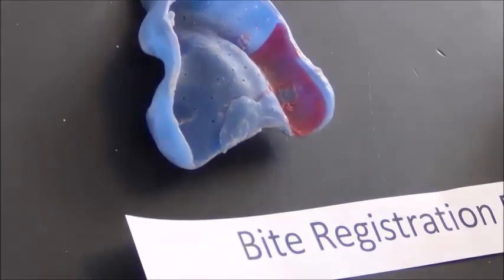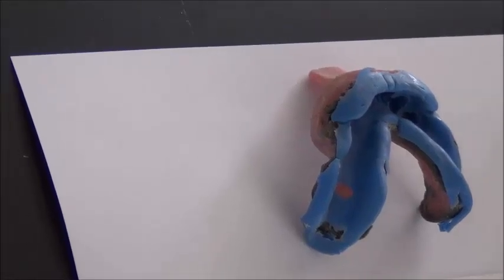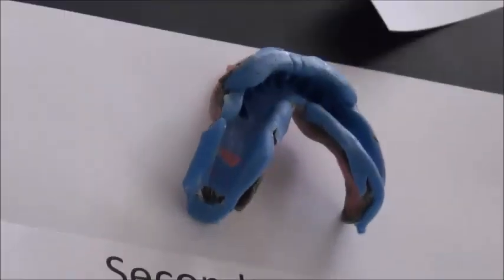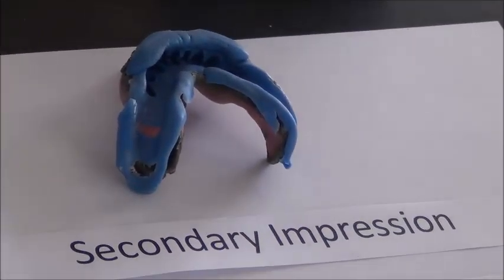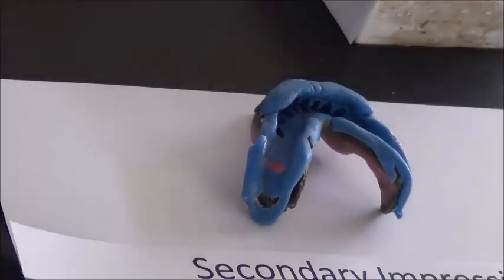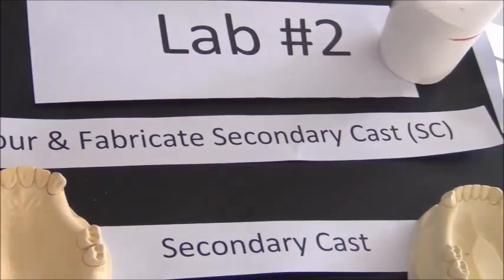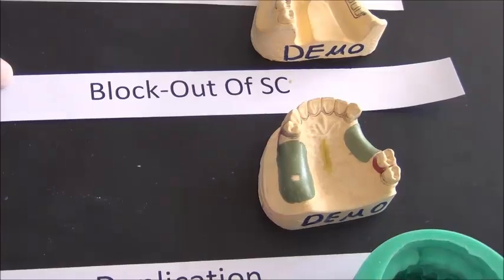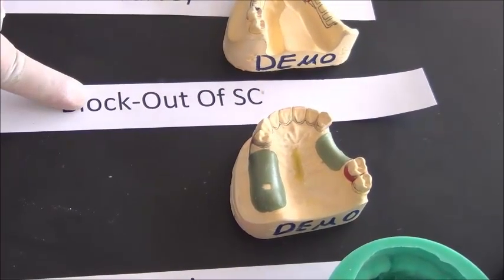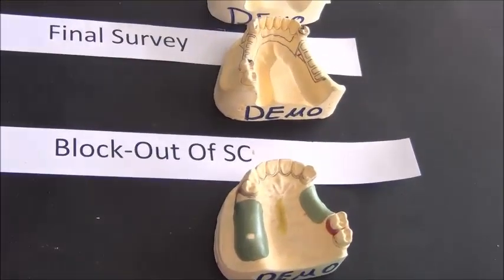After the secondary impression is taken, we have the final special tray with the impression material inside. We also do a bite registration procedure. All of these are sent back to the lab with an authorization form — a final design drawing that has been approved by the supervisor, telling the technician where to place all of the components. This secondary impression is poured using stone. The technician will then have the secondary cast ready, and will draw the final survey exactly as present in the authorization form, then do a block out of the secondary cast.